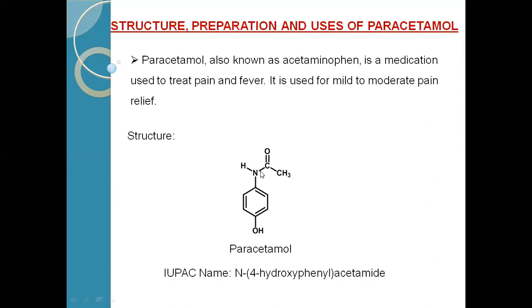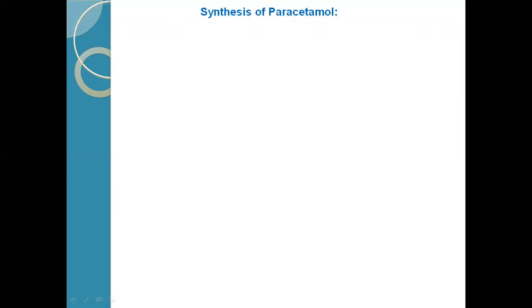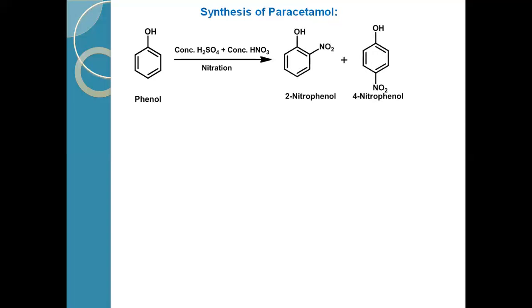Let us see the synthesis of paracetamol. The starting material for the synthesis of paracetamol is phenol. Phenol by nitration process using nitrating mixture, that is concentrated H2SO4 and concentrated HNO3, forms 2-nitrophenol and 4-nitrophenol. As OH is an ortho-para directing group, we will get two products: ortho-nitrophenol and para-nitrophenol.